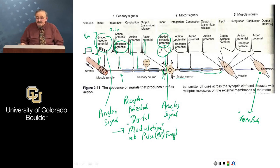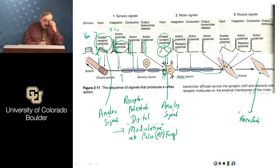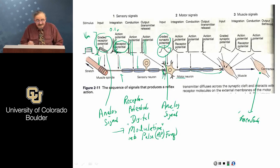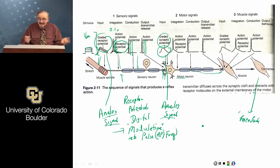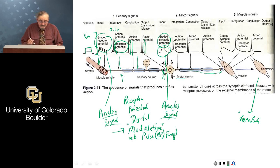In order to get information shaped at each processing spot transmitted down the axon, it must be put into the form of a train of digital impulses — a train of action potentials.